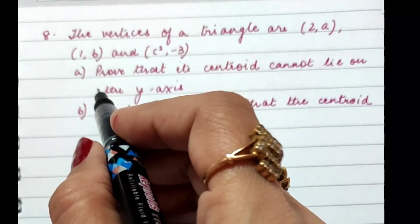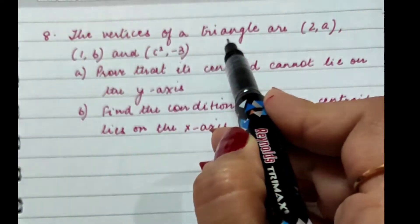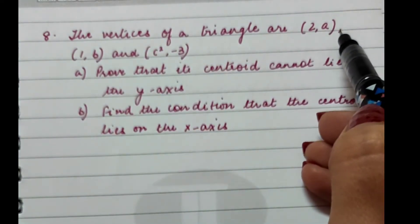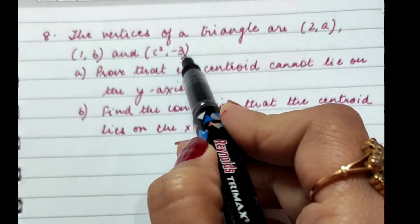Let us take up this question of coordinate geometry now. The vertices of a triangle are (2, a), (1, b), and (c², -3).